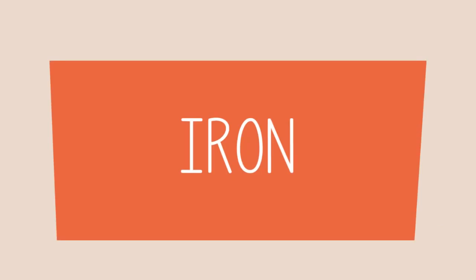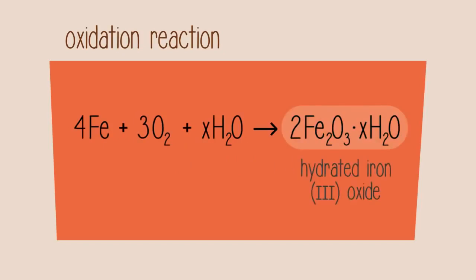So what has happened here? The iron has undergone an oxidation reaction, forming hydrated iron 3 oxide or rust. Salt and acid act as a catalyst for this reaction, which is why the nail in the second test tube formed more rust than the nail in the first test tube.